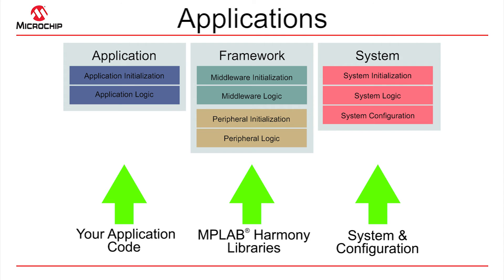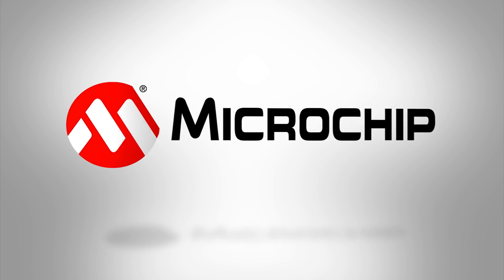I won't spend much time talking about that here because that's what you know best. The framework consists of a set of libraries for middleware, peripheral control logic — all the things that Microchip and its third-party partners know best, that we can implement for you ahead of time that you can just reuse. And to fit all that together, you need some system code and configuration code in order to make those selections and ensure that those different libraries operate correctly as you need them.